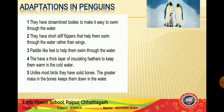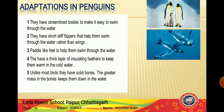Penguins have streamlined bodies which help them swim through water easily. They are white in color with black-colored feathers on their back. The white color merges well with the white surrounding of ice and snow, just like polar bears. The black-colored feathers on the penguin's back absorb heat from the sun - black is a very good absorber of heat - keeping them warm.